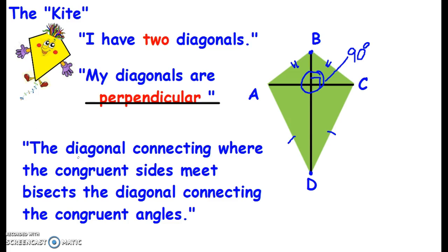Now there's one other property. The diagonal connecting where the congruent sides meet. So in this case, BD bisects AC. So that means that this piece is congruent to this piece. Okay, we know all that because it's a kite.